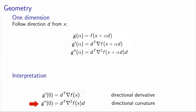But if you calculate the second derivative at alpha equals zero, this quantity is the directional curvature. And what we have seen in the previous property is that if this is non-negative, it means that the function is convex in this direction. So if the quantity is non-negative for all d — which means that the Hessian matrix would be positive semi-definite — it means that the function is convex at x. So we have a direct interpretation of the second derivative in terms of curvature of the function.